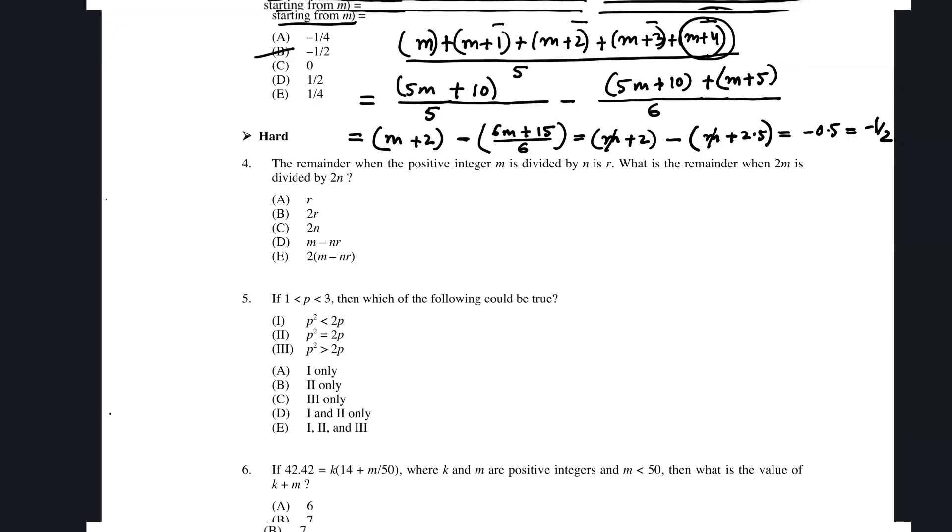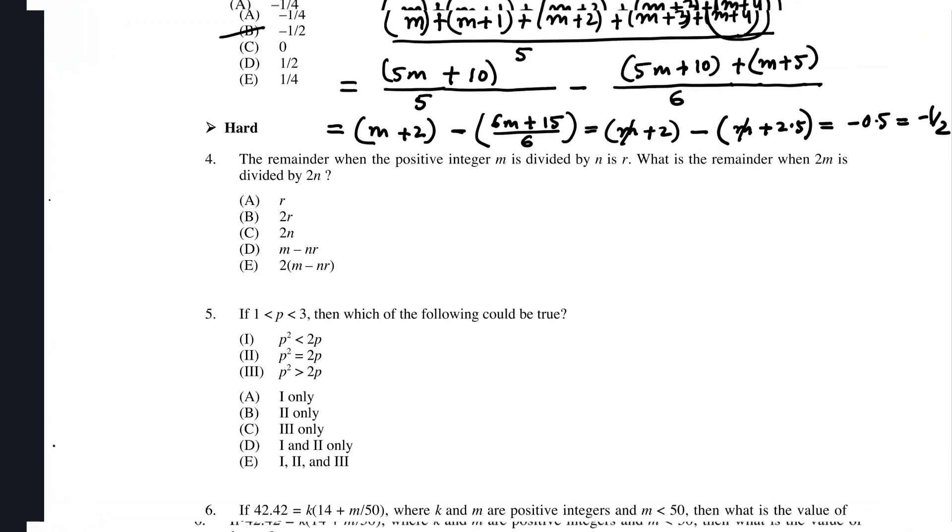The first math we have here from the hard section is number 4. It says the remainder when the positive integer m is divided by n is r. What should be the remainder when 2m is divided by 2n? Let's assume that when we divide m with n, the remainder is r, and the quotient is x. From there, we can write the equation that m equals x times n plus r, right?